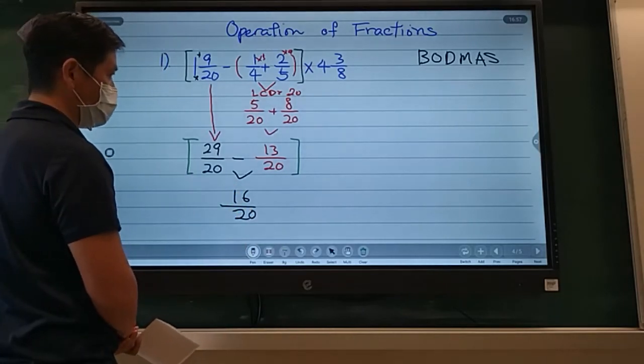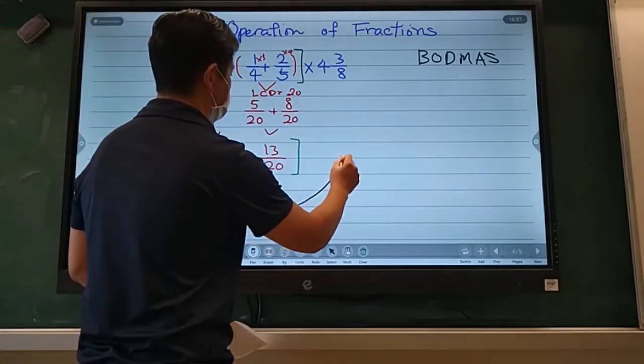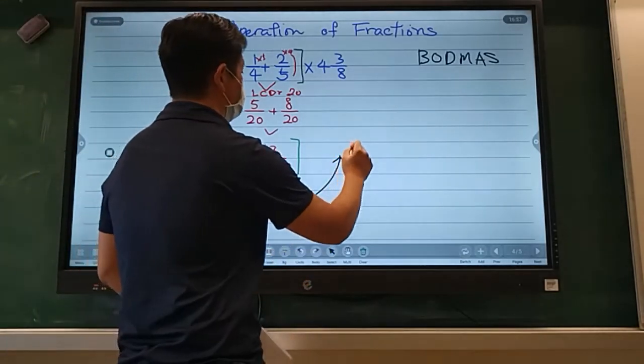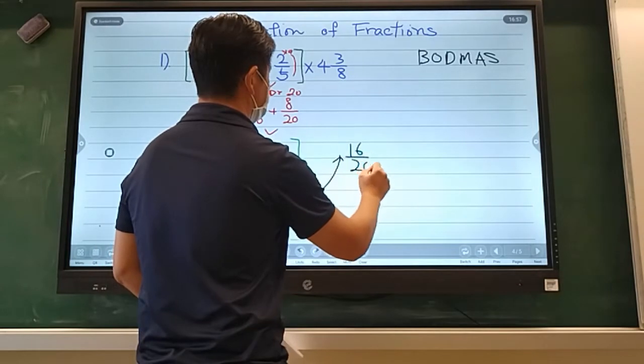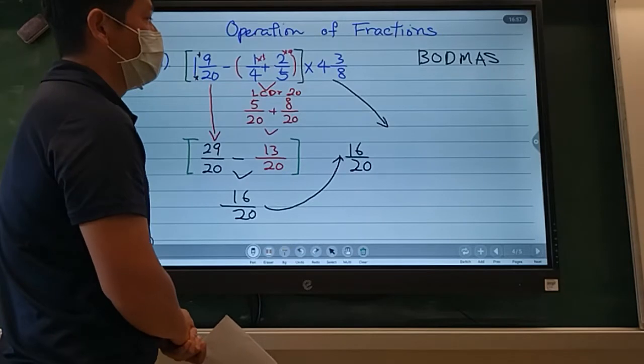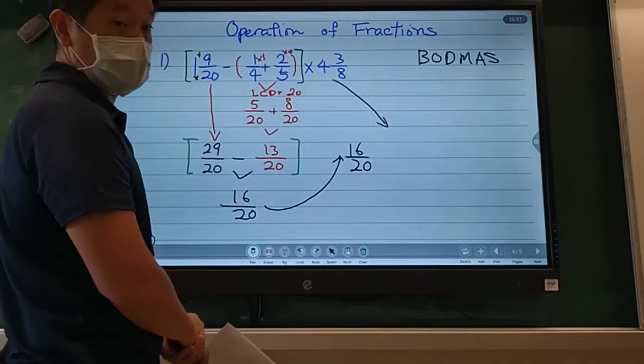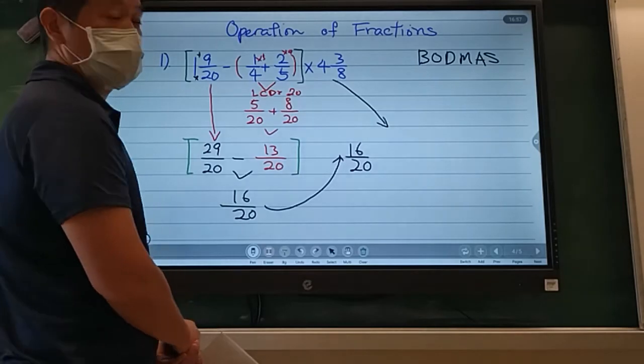So this one, I will get sixteen over twenty. Okay? Now, we're done with the bracket. Let's bring it up here so we have more room. Sixteen over twenty. Now, we have to do this part. Down here. Now before that, I have sixteen over twenty times four and three-eighths. So what is my first step?